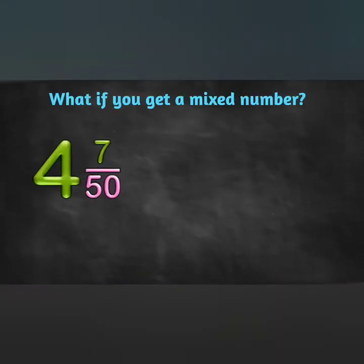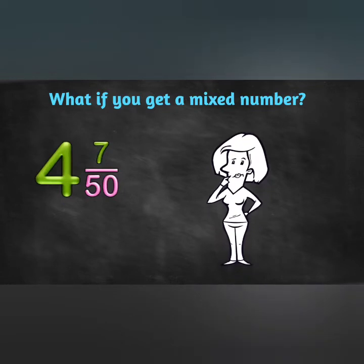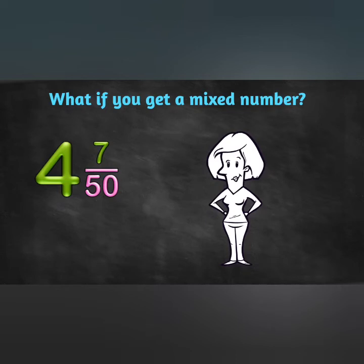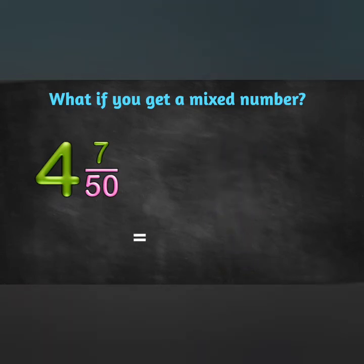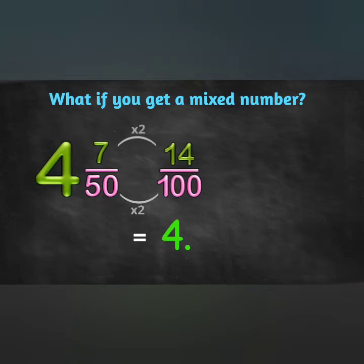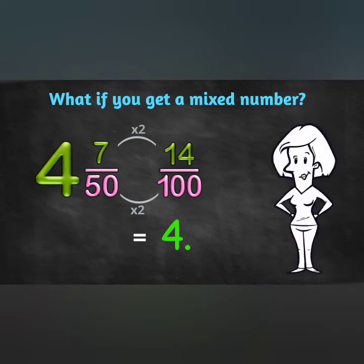And what if you get a mixed number, like this? 4 and 7 fiftieths. Is that going to be too hard for you? I don't think so! First, put the whole number part in the answer. Then do the fraction part separately. To turn 50 into 100, you multiply by 2, so same up top: 7 times 2 is 14. 14 hundredths! Then the numerator is just your decimal fraction. Easy!